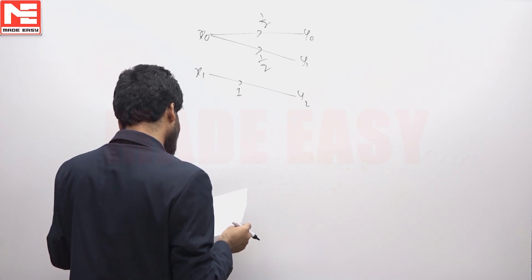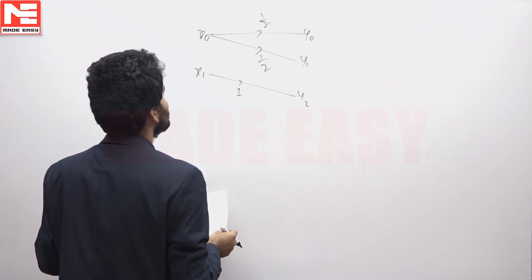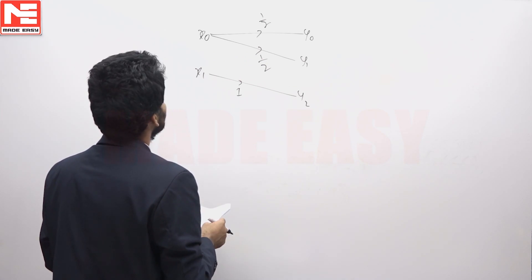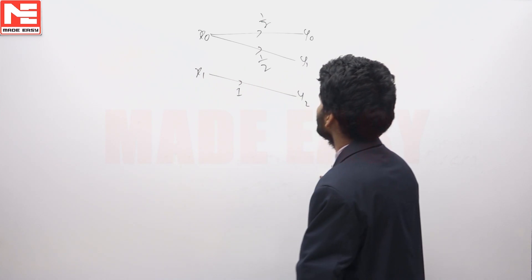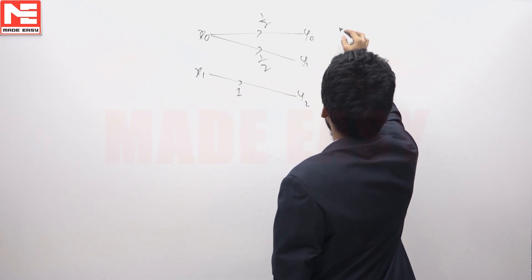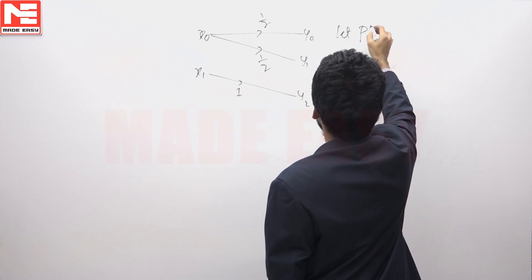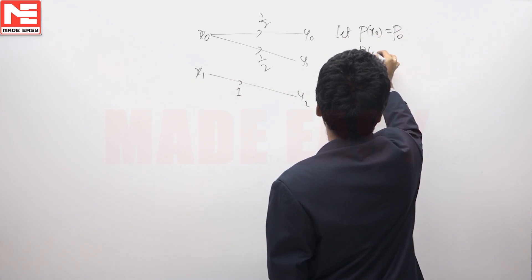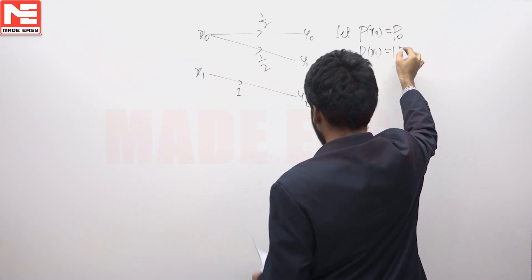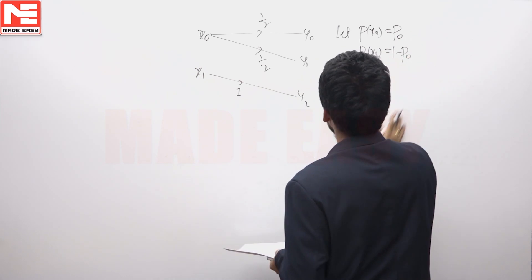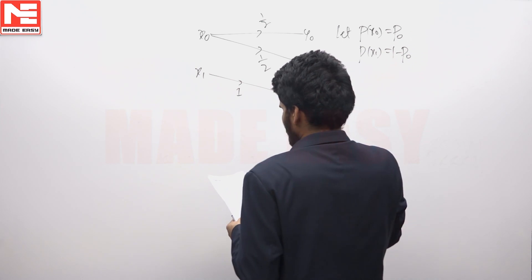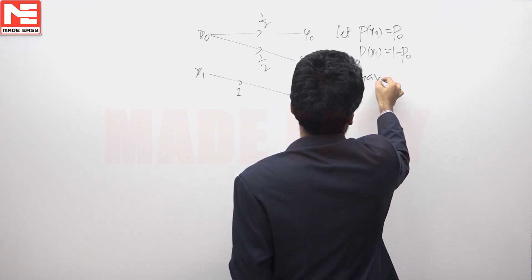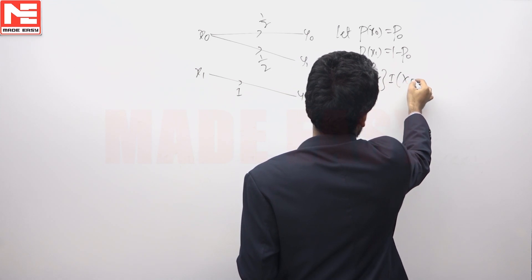A system is given with two inputs and three outputs, and we have to find the channel capacity of this system. Let P(X0) = P0, then P(X1) = 1 - P0. Channel capacity is equal to the maximum of I(X;Y), the maximum of mutual information.